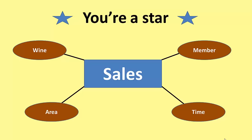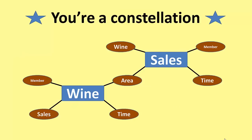Finally, we could look at it as a constellation. We have the sales, and then we can link the different dimensions together with other facts — for example, the wine, the member, or the area. And then we've got a proper data warehouse. We can make the constellation as complicated as we want.